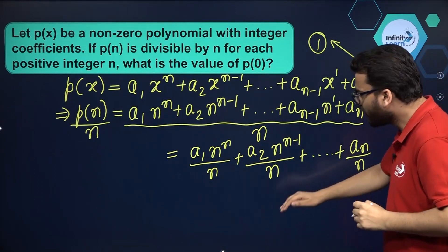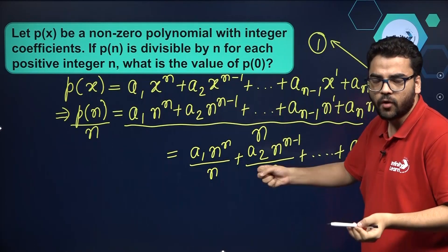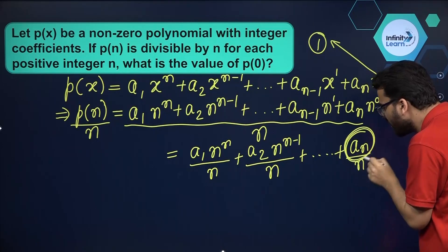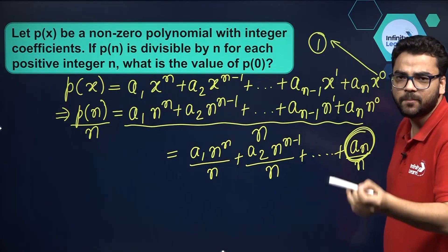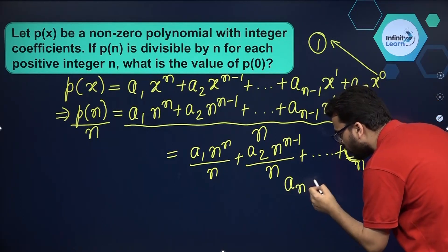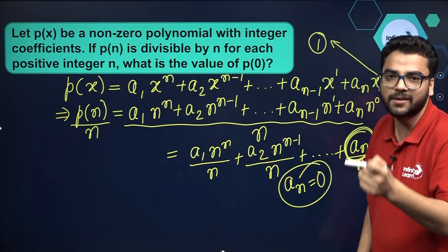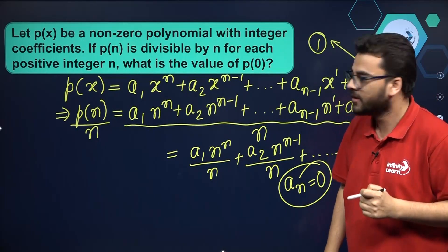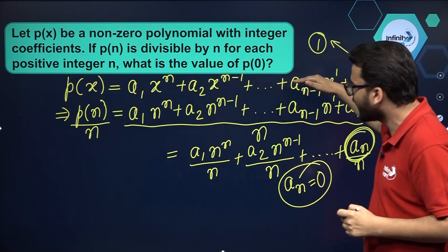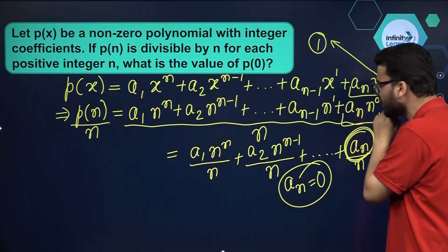It is given that this expression is exactly divisible by n. So there is no other possibility but to take aₙ to be equal to 0. It means in this polynomial there is no constant term — this term is 0.